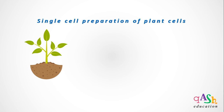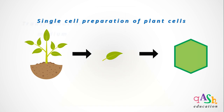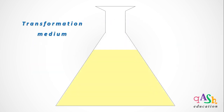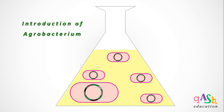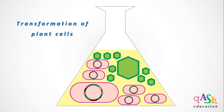Next, we study the process of preparation of single cell suspension of plants. This is done to obtain a single cell suspension which will be used to carry out transformation. The desired plant is taken and an explant is collected from it, from which a single cell suspension is prepared. A transformation medium is taken into which transformed agrobacterium cells are introduced along with single cells of plants.